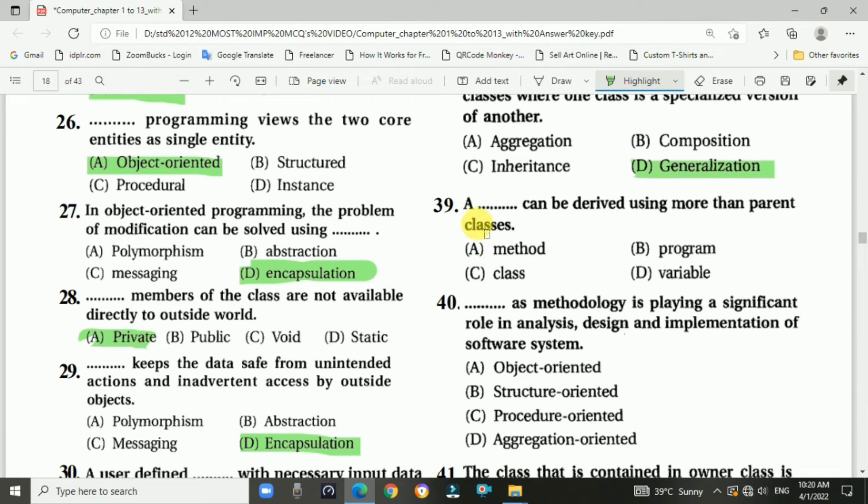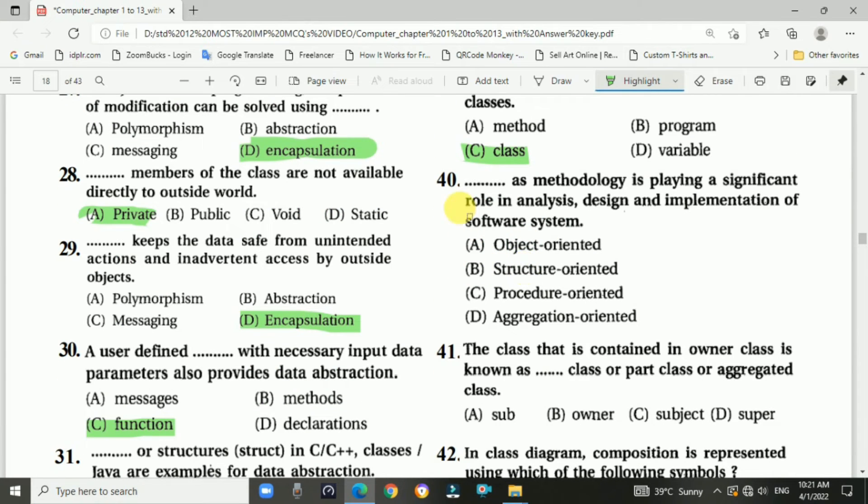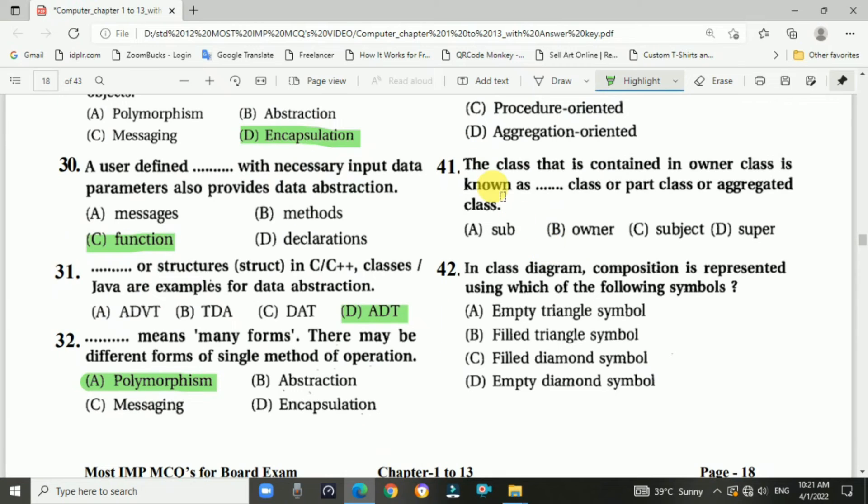Question number thirty-nine: Blank can be derived using more than one parent class. Answer is C, class. Question number forty: Blank methodology is playing a significant role in analysis, design, and implementation of software systems. Answer is object-oriented. Question number forty-one: The class that is contained in an owner class is known as blank class or part class or aggregated class. Answer is subject class.